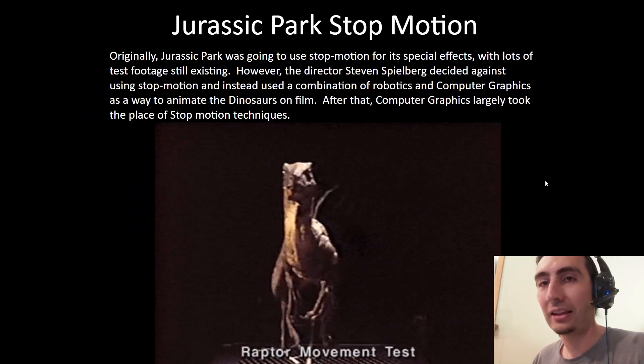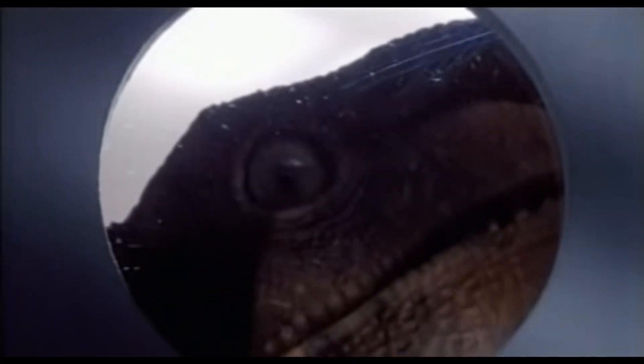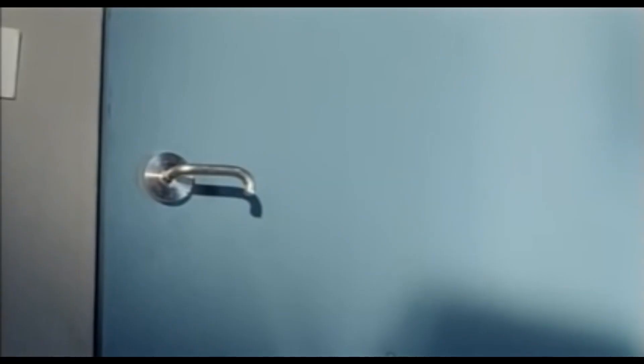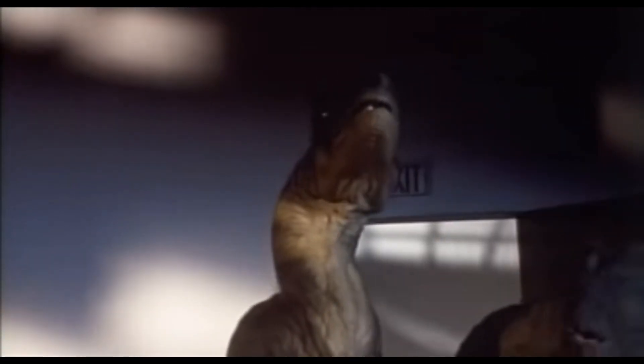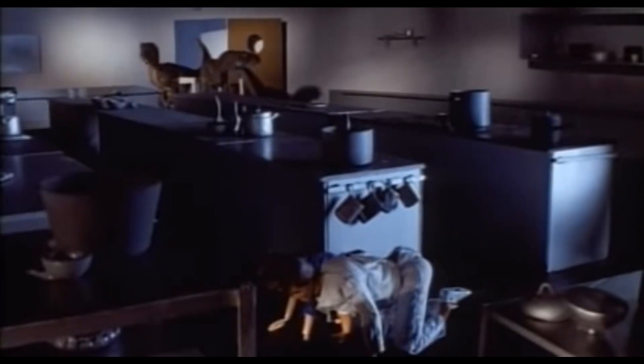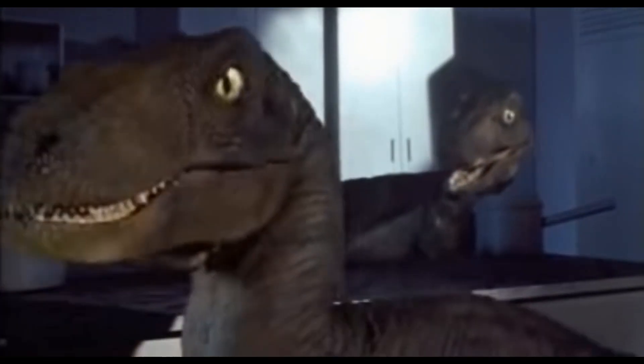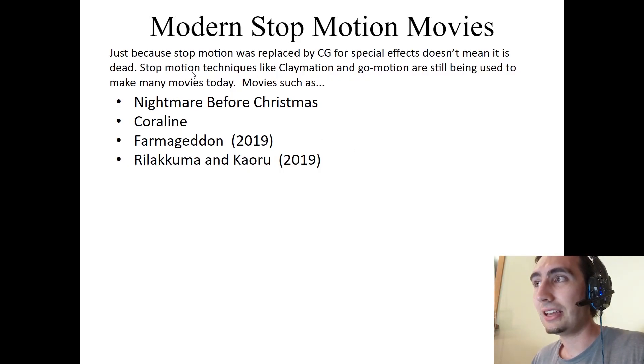Coming to more modern times: Jurassic Park was made in 1993, and originally it was going to use stop motion for its dinosaur special effects. There's lots of test footage that still exists of them trying to make the dinosaurs in stop motion. But director Steven Spielberg decided he didn't like the way it looked, and instead used a combination of robotics and computer-generated graphics — CGI — to animate the dinosaurs. After that, this really marked the end of stop motion as special effects in major movies, as computer graphics took over.